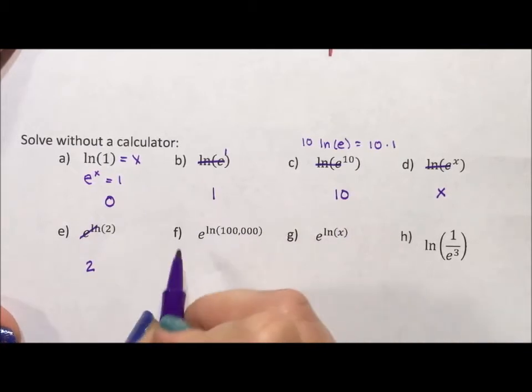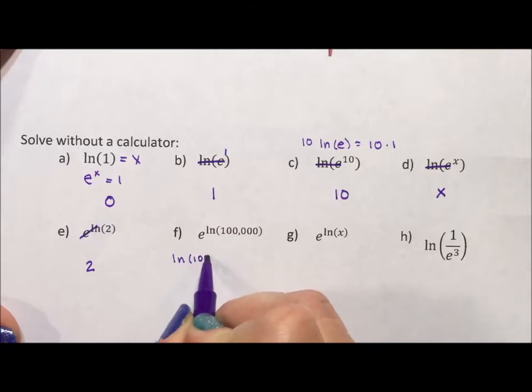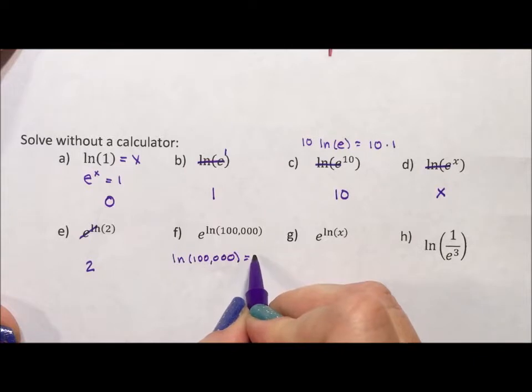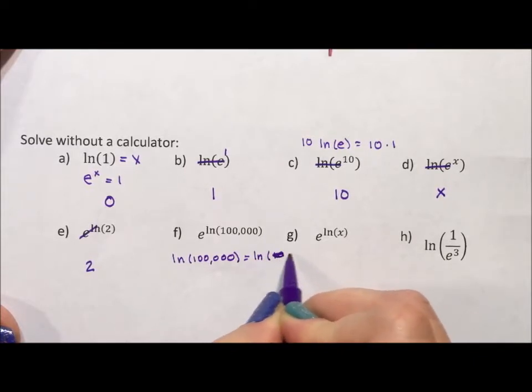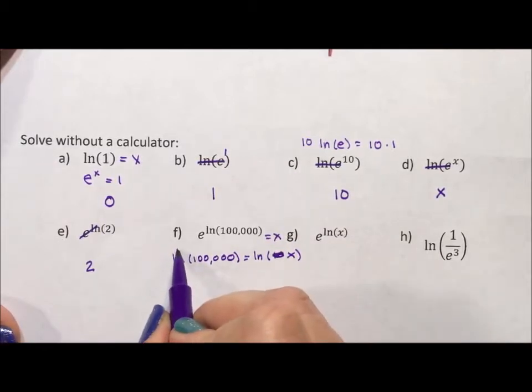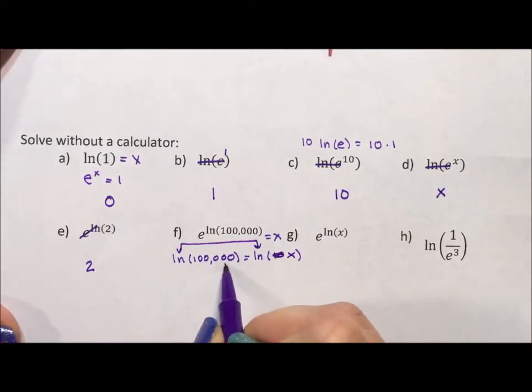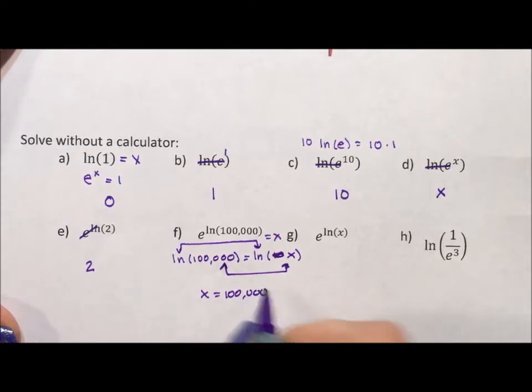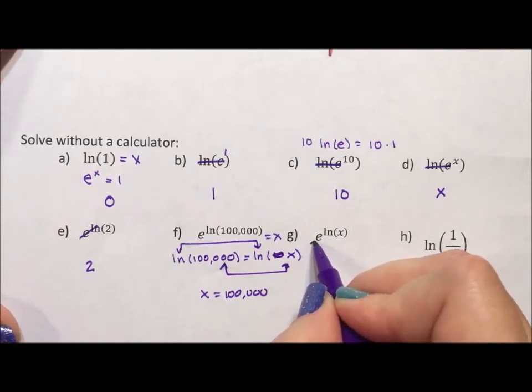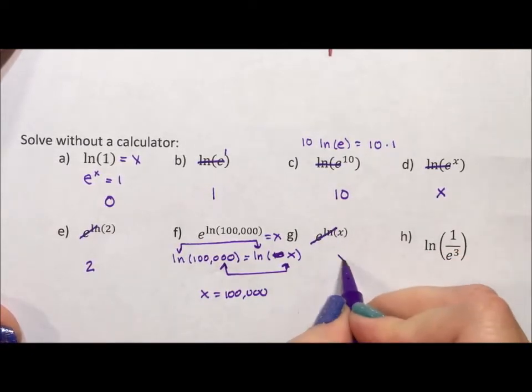The exponent, natural log of 100,000, equals natural log of 100,000. Well, of x, really, because x is what we're solving for. Because the natural logs are the same, the arguments have to be the same, so x has to equal 100,000, because they're inverses. So these two are there and back again, leaving us with x.